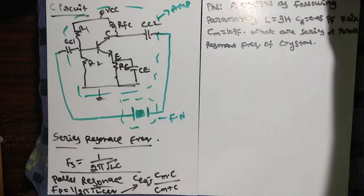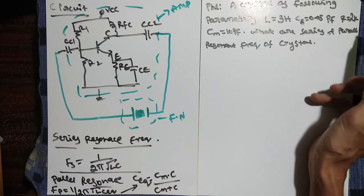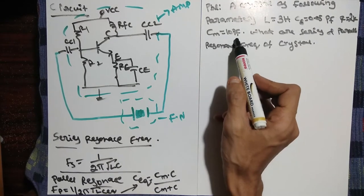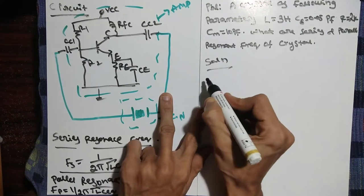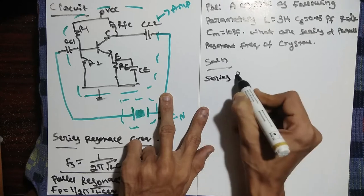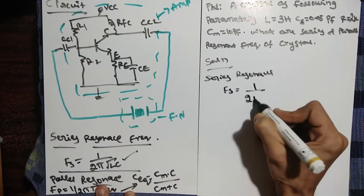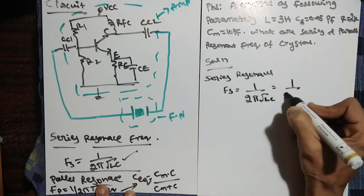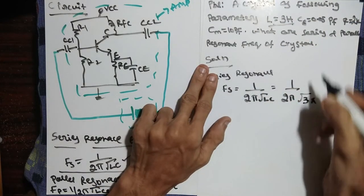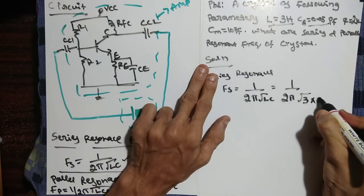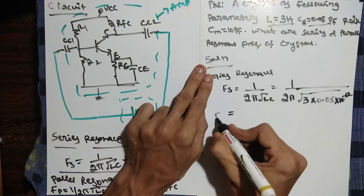Now a problem: a crystal has the following parameters — L = 3 H, C = 0.05 pF, R = 2 kΩ, and Cm = 10 pF. Find the series and parallel resonance frequencies. For series resonance, fs = 1 / (2π√(LC)) = 1 / (2π√(3 × 0.05 × 10⁻¹²)). Simplifying this gives fs equal to approximately 410.88 kHz.